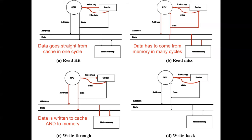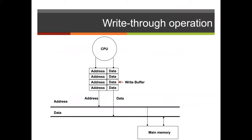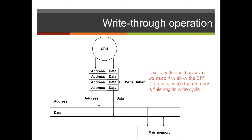With a write-back, data is written to the cache and then written back to memory later. Considering the write-through policy, what we want to do is ensure we are appropriately updating the cache and the main memory on each CPU write operation. This makes use of a write buffer, and it is important to note that additional hardware is needed to allow the CPU to proceed while the memory is finishing its write cycle.